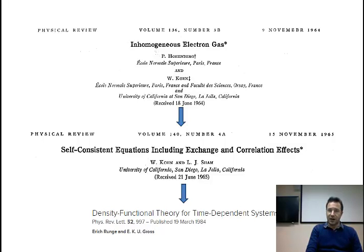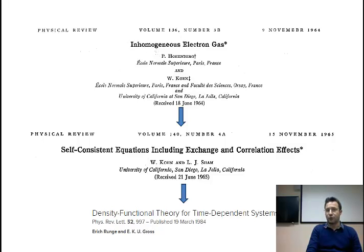Then we have a second paper in 1965, written by Kohn and Sham, where essentially you have a set of equations now known as the Kohn-Sham equations — a set of coupled Schrödinger equations which can describe to a certain level an n-body quantum problem.